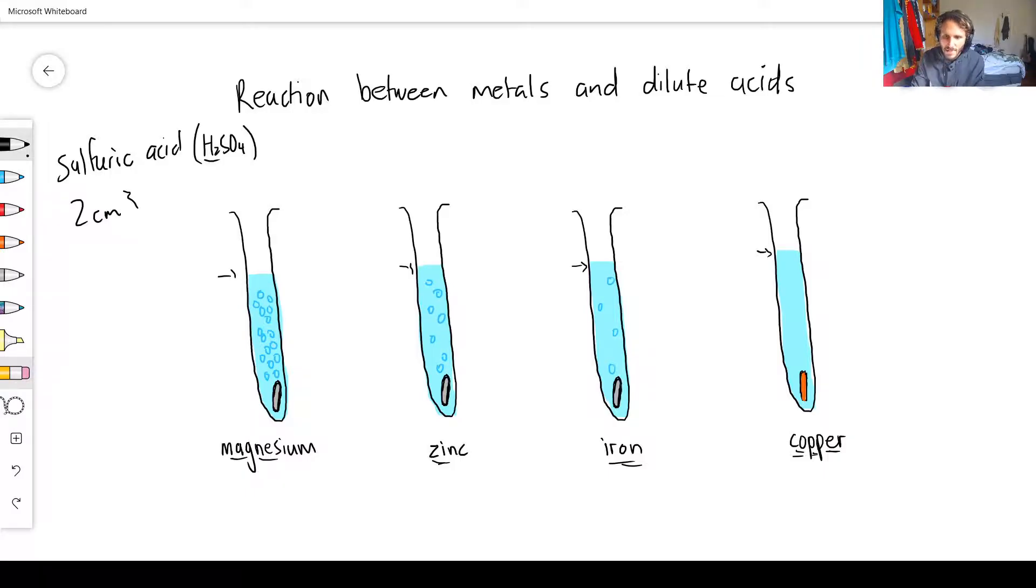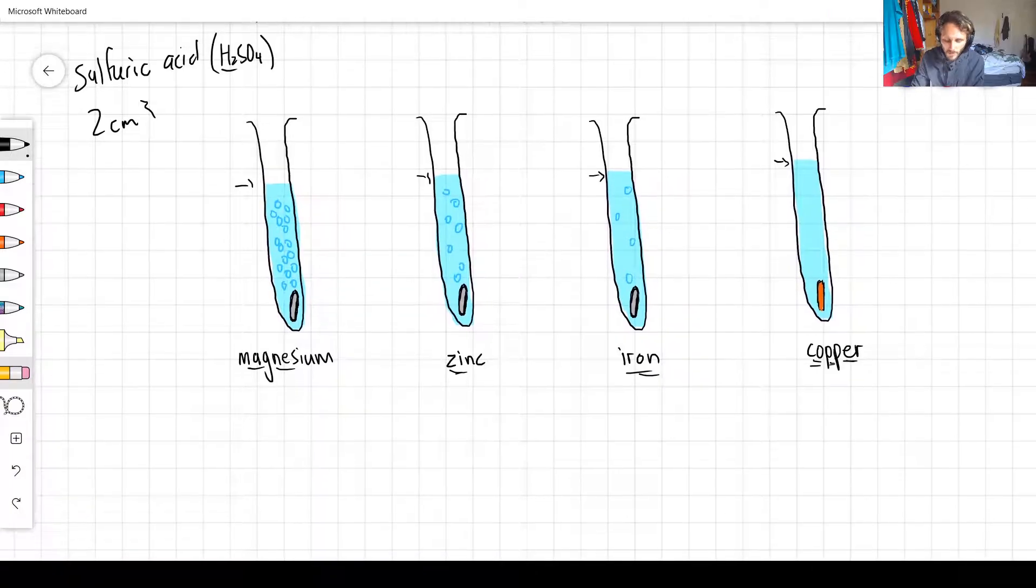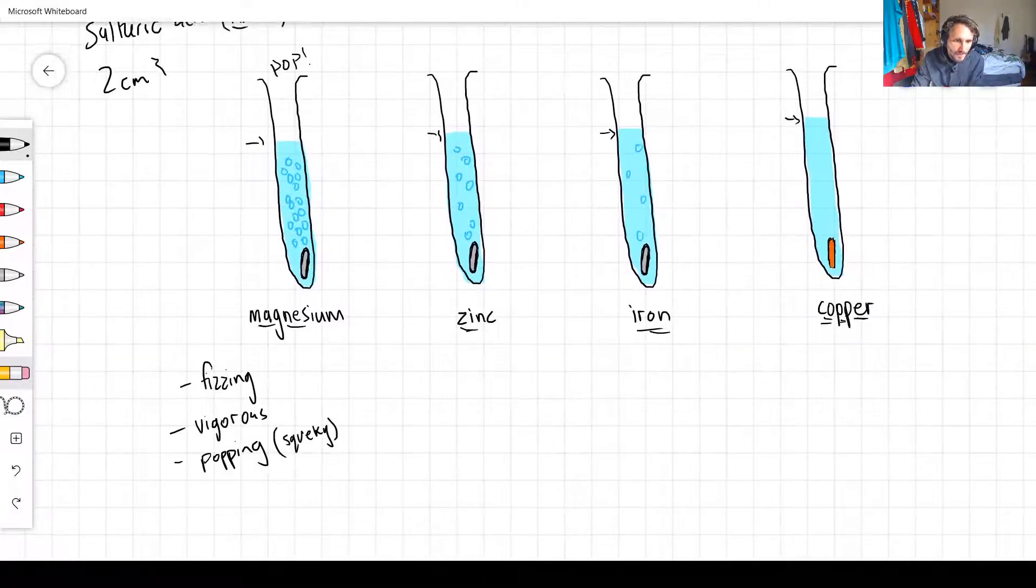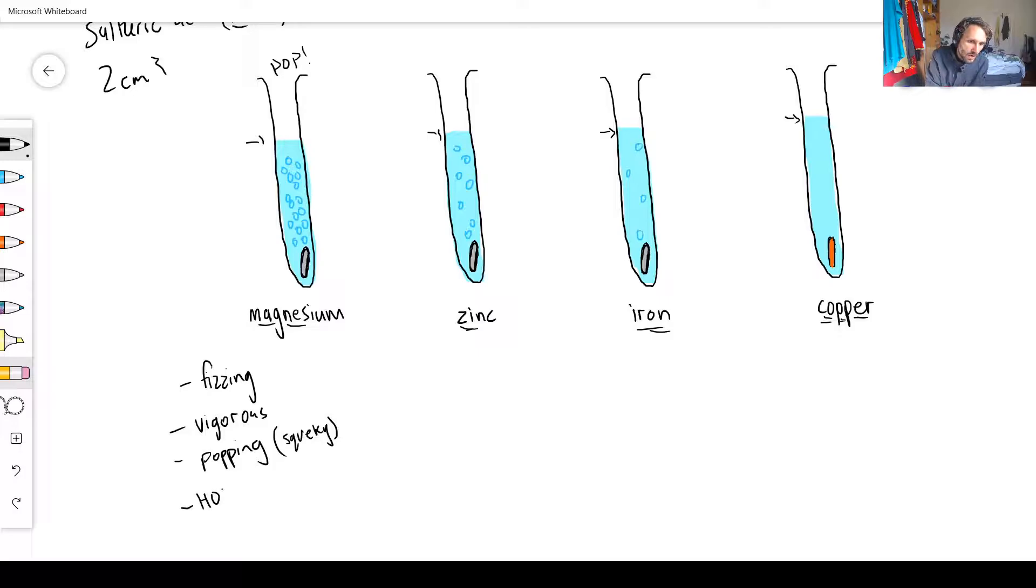So what we can do is we can make a little summary of what's happening in each of these boiling tubes. The fizzing is vigorous - it's like reacting, going crazy. If we had to light the top it would make a popping sound, a squeaky pop, because of the hydrogen that's releasing. If you had to feel this test tube it would be very hot.